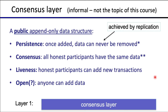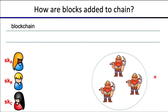At a high level, those are the properties of consensus. Let's quickly take a look at how blocks are added to the blockchain — this will illustrate how the consensus mechanism works in practice. We have our set of participants: Alice, Bob, and Carol. Each one of them has a secret key that they use to sign transactions. We'll see how digital signatures work later in the lecture, but for now just think of these as secret keys used to authorize transactions.